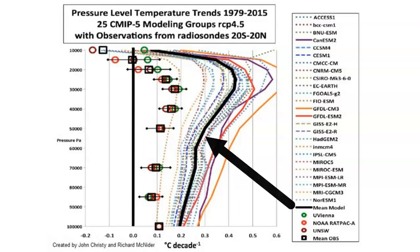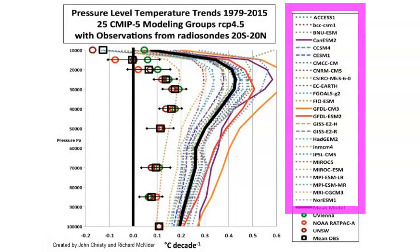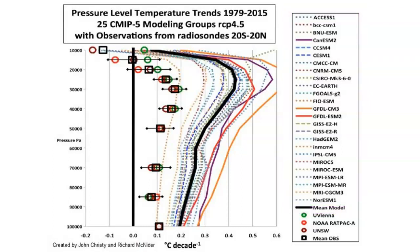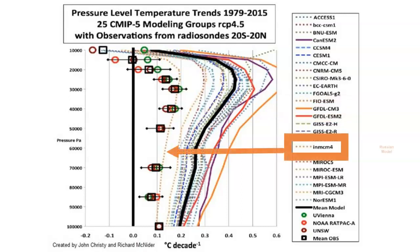Now let's see the climate model forecasts and how they compare to radiosonde reality. The thick black line is the average heating from all 25 model groups, and the smaller dots and dashes are the individual model groups. Remember the GFDL model — it was the worst model and yet it won the Nobel Prize. Here it is again: the solid orange line, which goes off the chart higher up in the atmosphere. And now the Russian model — the dotted orange line — is the closest to the ground-truth radiosonde data at all levels. This is amazing.